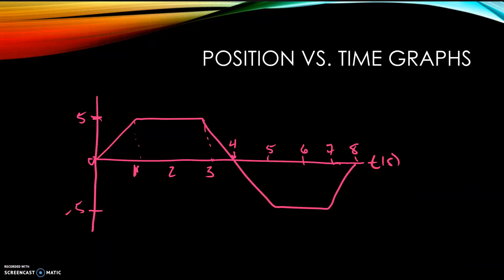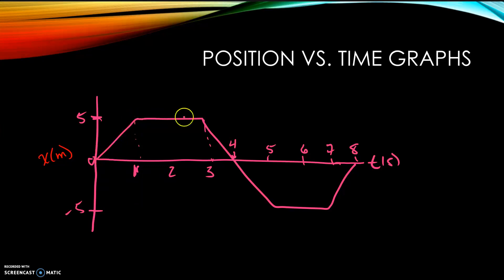To start off, let's look at a position versus time graph. We have position in meters on this axis and time along the horizontal axis, with approximately every second marked out. Within the first second the object goes to five meters, stays at five meters for the next two seconds, goes back to zero, then goes to negative five, stays there briefly, and returns to the start position.